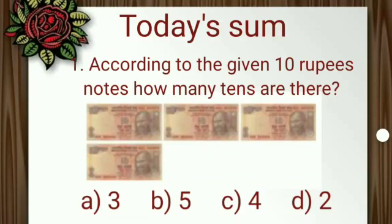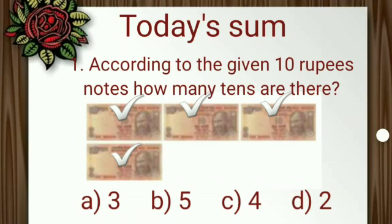Today's sum: according to the given 10 rupee notes, how many 10s are there? Students, let's count the given notes: 1, 2, 3, 4. We have 4 ten-rupee notes. We have learned that 1 ten-rupee note is equal to 1 ten. So how many 10s are in 4 ten-rupee notes? Yes — 4 10s.